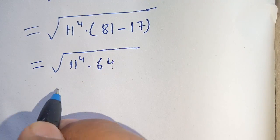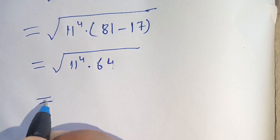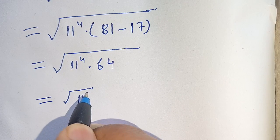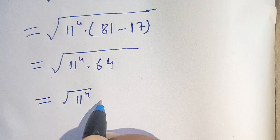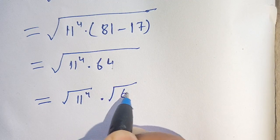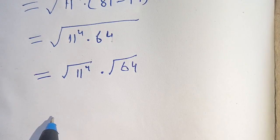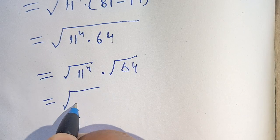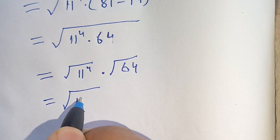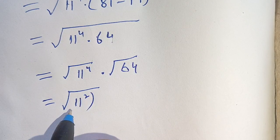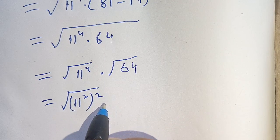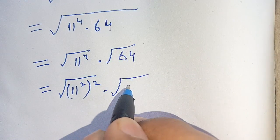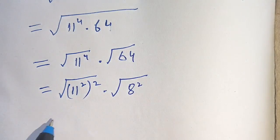Now we have square root of 11⁴ times square root of 64. We can write 11⁴ as (11²)² and 64 as 8². We then cancel each square with the square root.